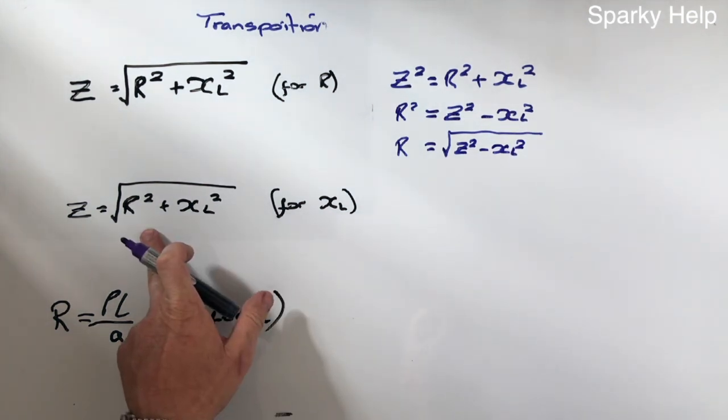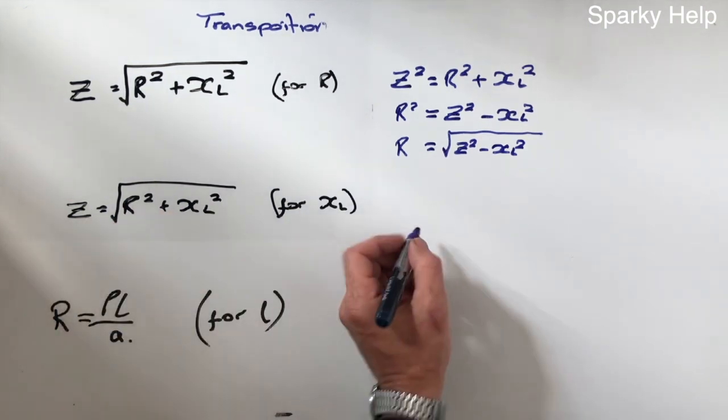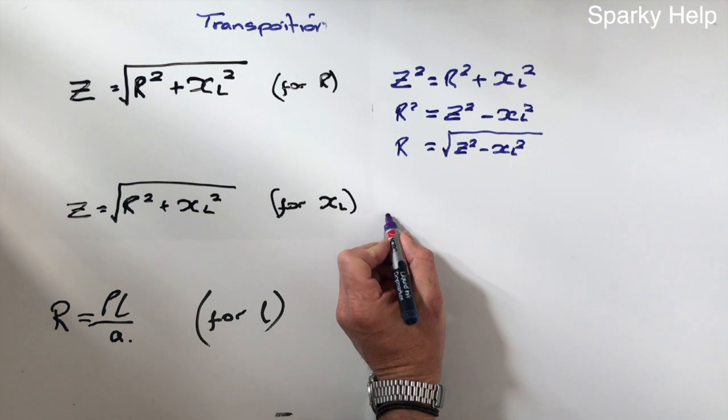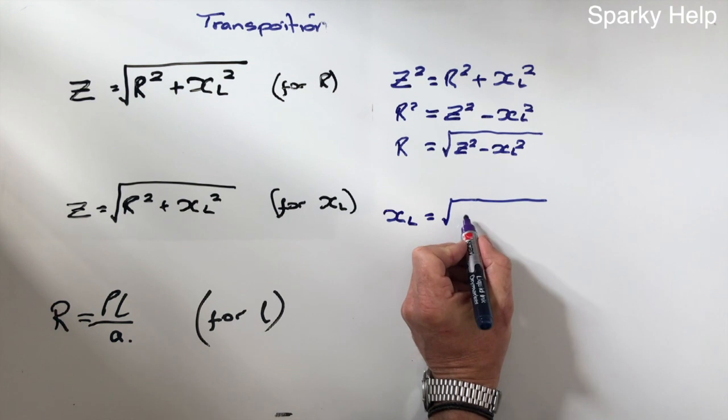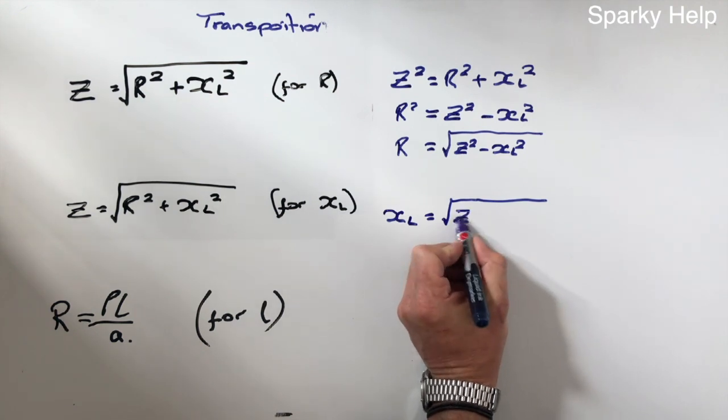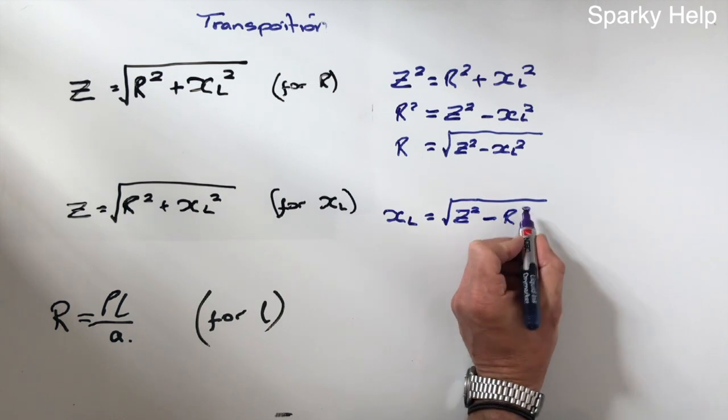This one, basically the same, so this one becomes XL is equal to the square root of Z squared minus R squared.